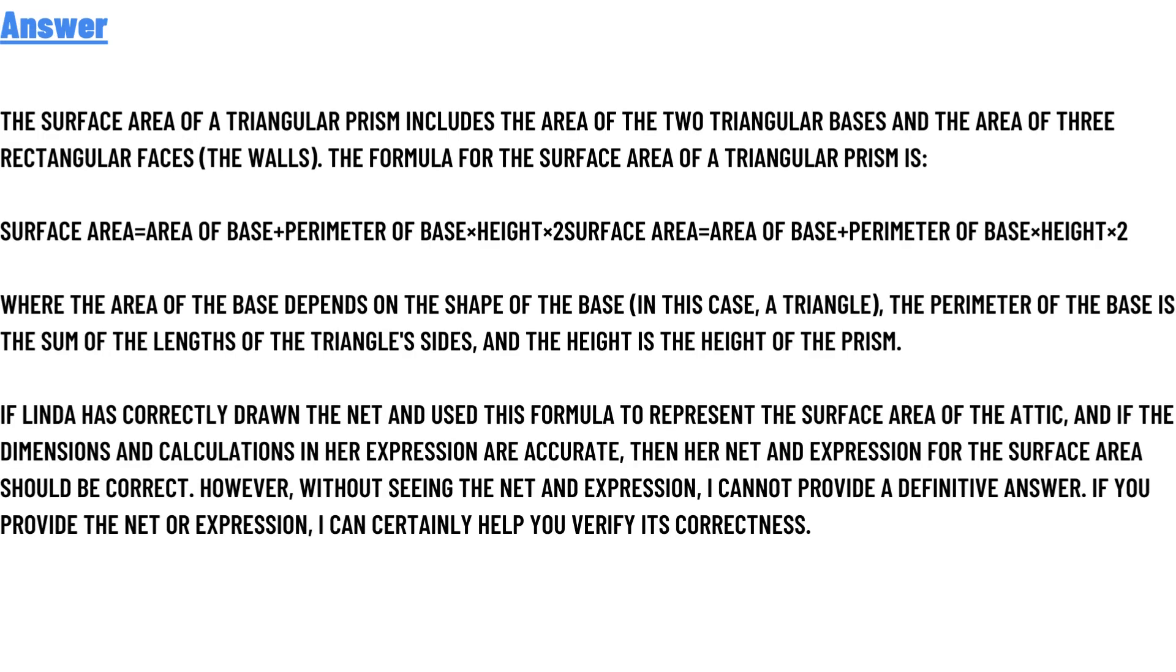The correct answer to the question is: the surface area of a triangular prism includes the area of the two triangular bases and the area of the three rectangular faces. The formula for the surface area of a triangular prism is: surface area equals area of base plus perimeter of base multiplied by height, multiplied by two.